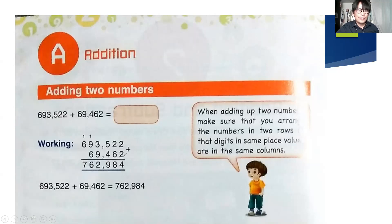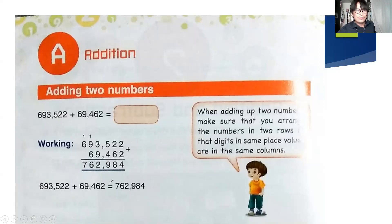Now we add: two plus two equals four; two plus six equals eight; five plus four equals nine; three plus nine equals twelve, carry one. One plus nine plus six equals sixteen by the commutative property, so carry one, write six. One plus six equals seven. The sum is seven hundred sixty-two thousand eight hundred and ninety-four.